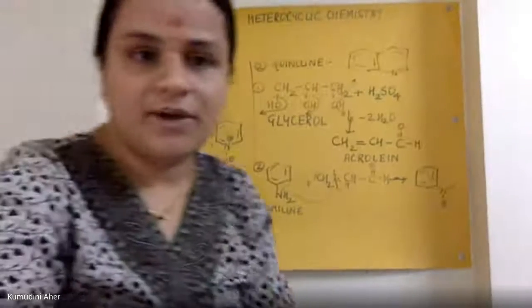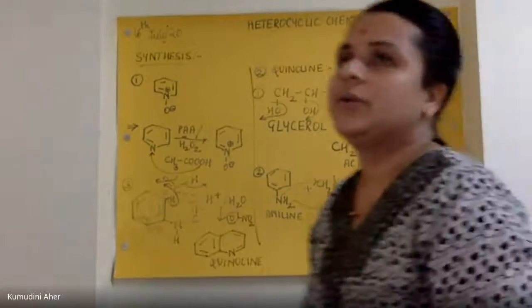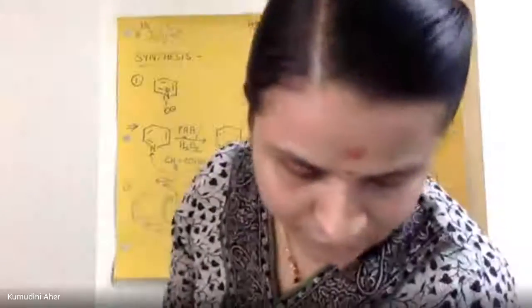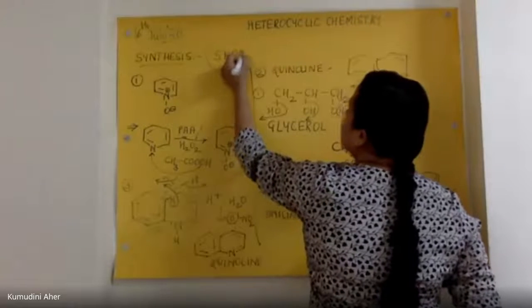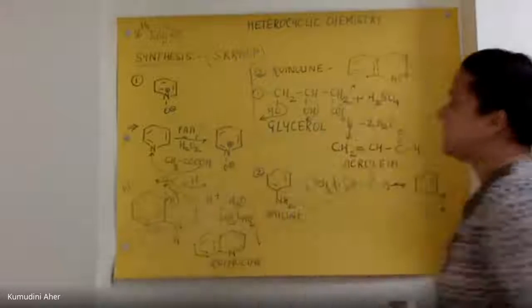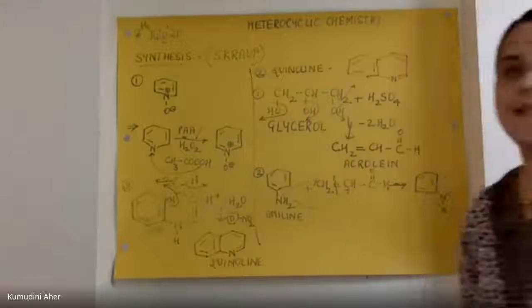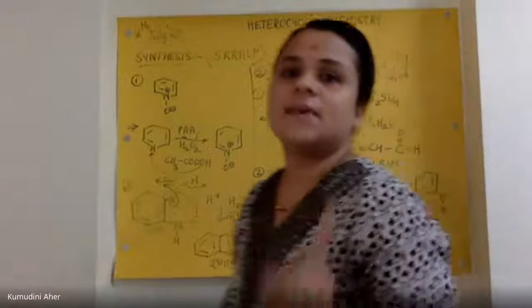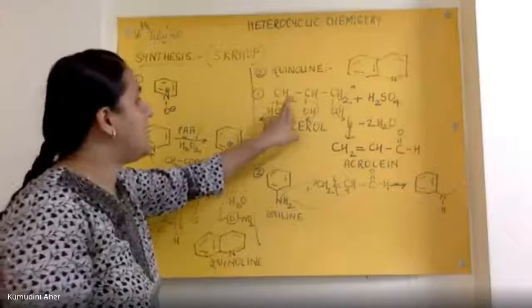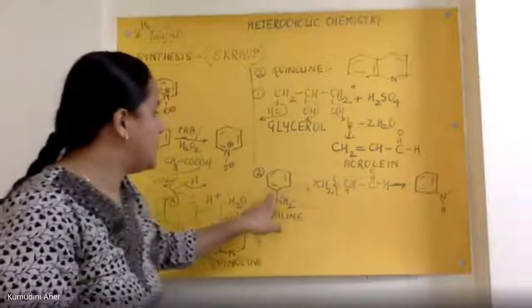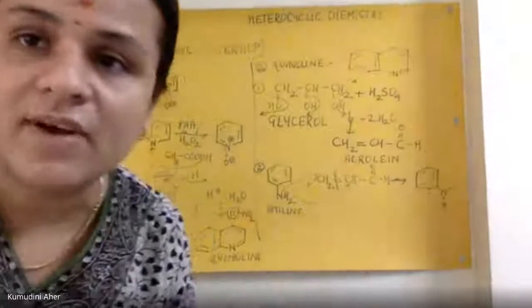So write down the question. Give a short note on Skraup synthesis. The name is Skraup. Skraup synthesis of quinoline. The question is, how do you synthesize quinoline? So your molecules: first glycerol, then next molecule is acrolein, then aniline, finally you are going to do cyclization, and this is the formation of quinoline. Is this one very clear to everyone?